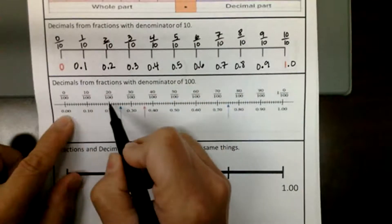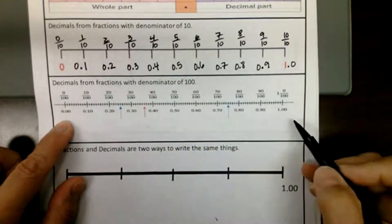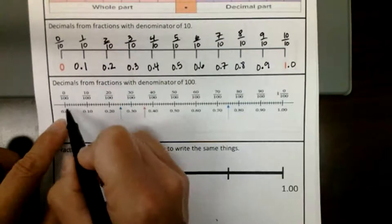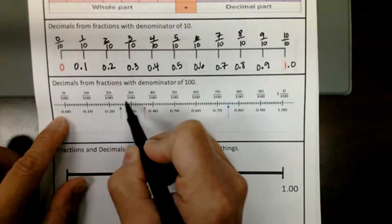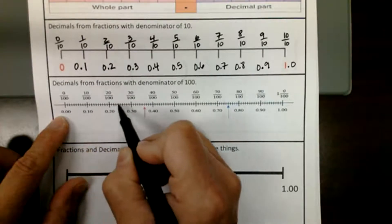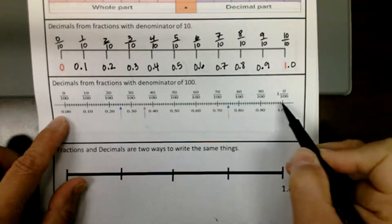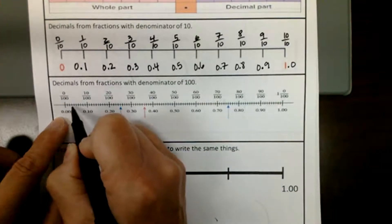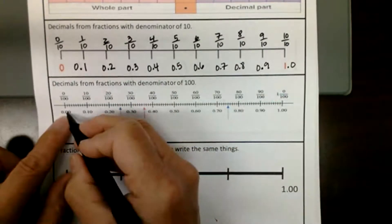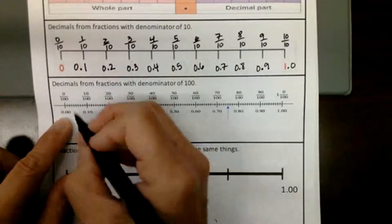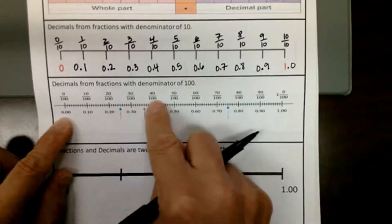Up here, we did one, two, three, four, five, six, seven, eight, nine, ten — and we call those tenths. But down here, we have all these little ones in between. There's ten there, another ten there, another ten there. So it's ten, twenty, thirty, forty, fifty, sixty, seventy, eighty, ninety, and a hundred. Because we're counting all these little tiny ones, when we break up from zero to one, we've broken it into a hundred parts. So the denominator is now a hundred.